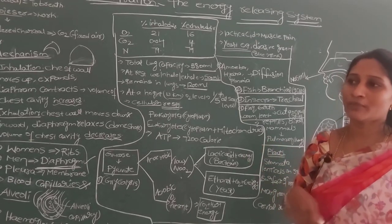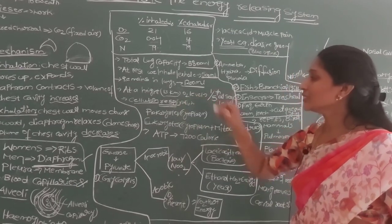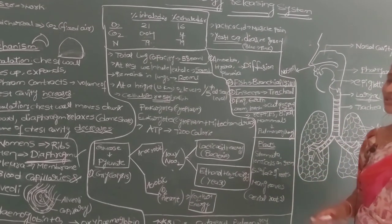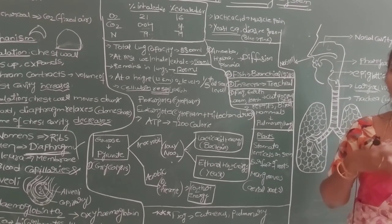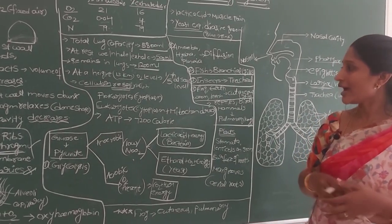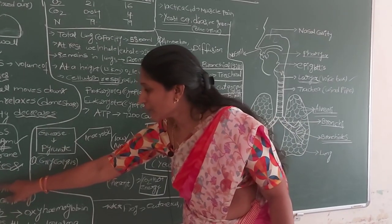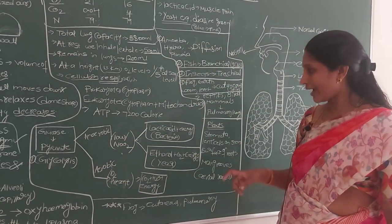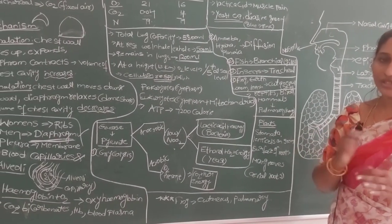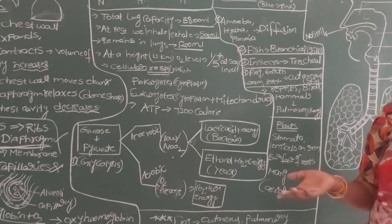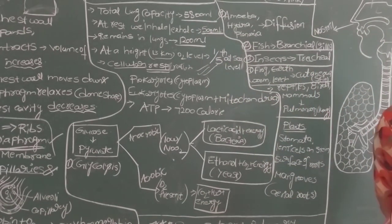Respiration includes five stages: (1) breathing — inhaling oxygen and exhaling carbon dioxide; (2) gas transport between alveoli and blood capillaries; (3) transport of oxygen from blood capillaries to cells; (4) exchange of gases between blood capillaries and body cells; and (5) cellular respiration — the most important process.